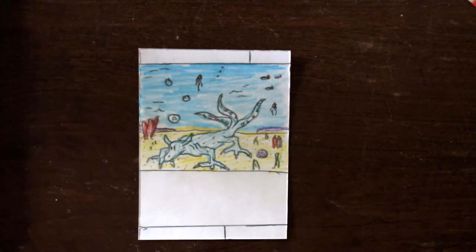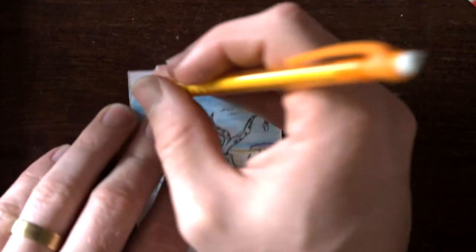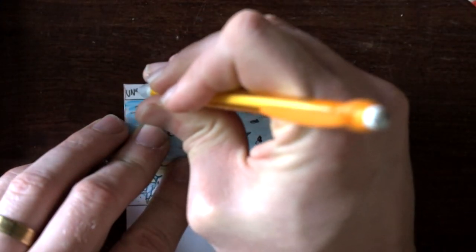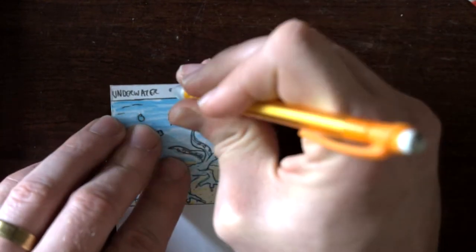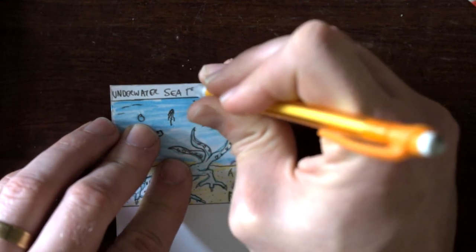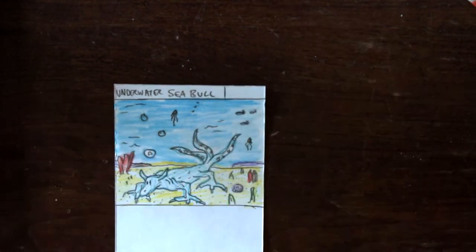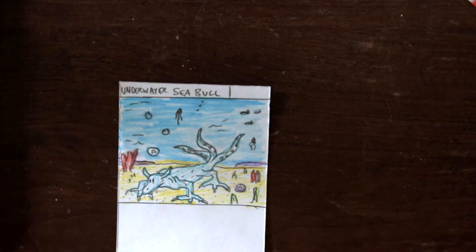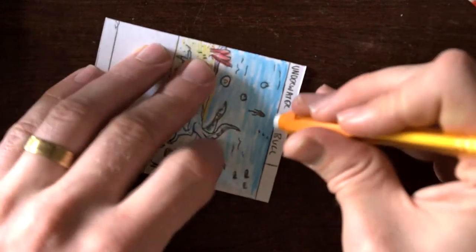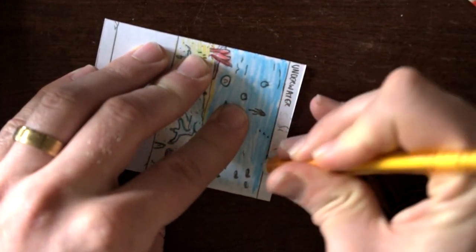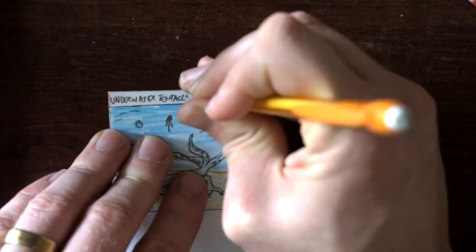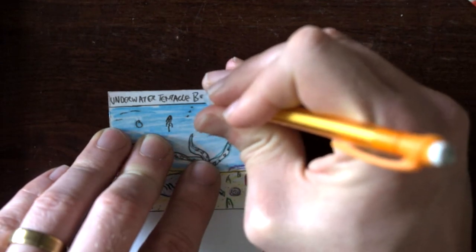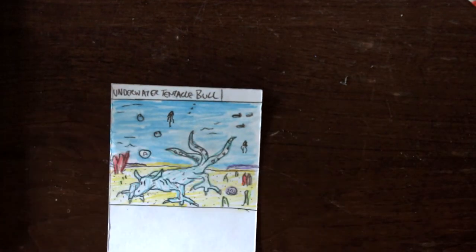Now let's give it a name. I've got it, completely making it up on the spot. Underwater Sea Bull. Because that kind of looks like a cow. It's under the sea. Or it's sea bull. Or actually, you know what, I'm changing my mind. Underwater Tentacle Bull. Underwater Tentacle Bull. That's much cooler.